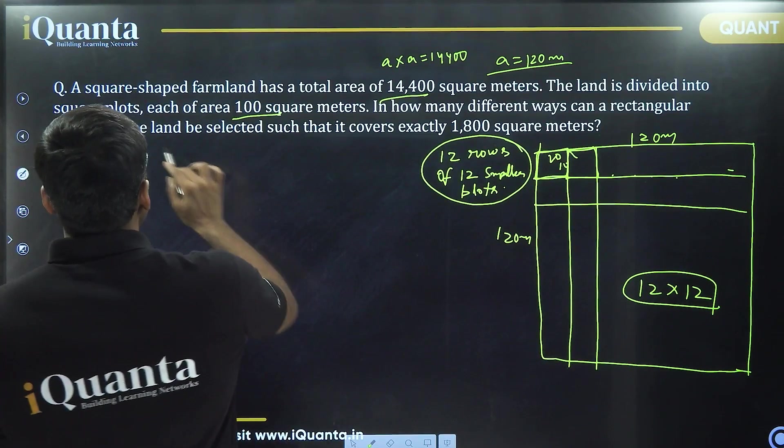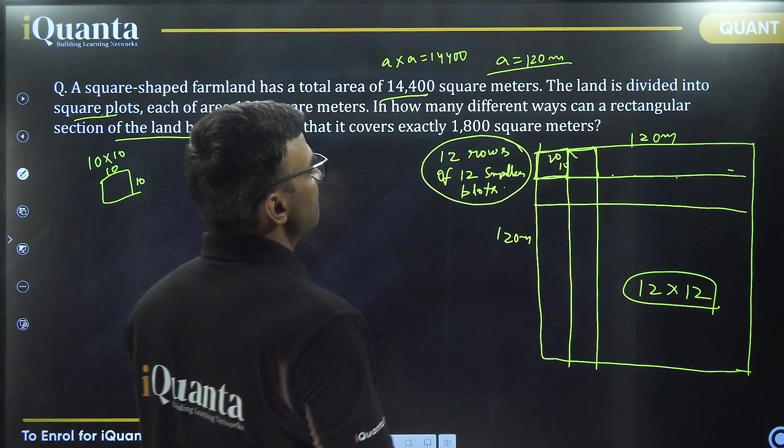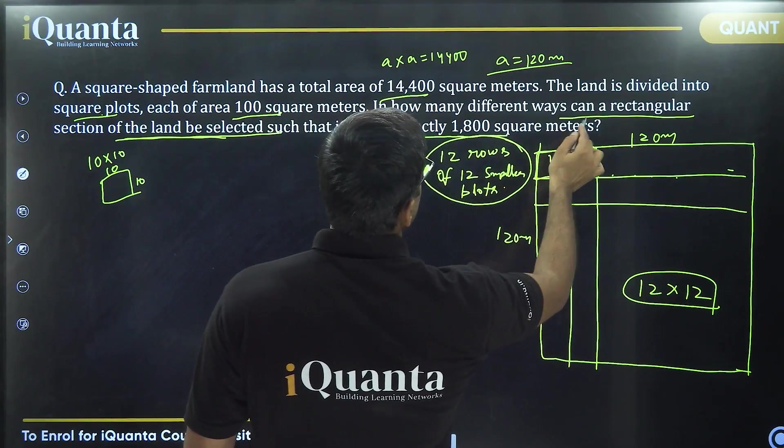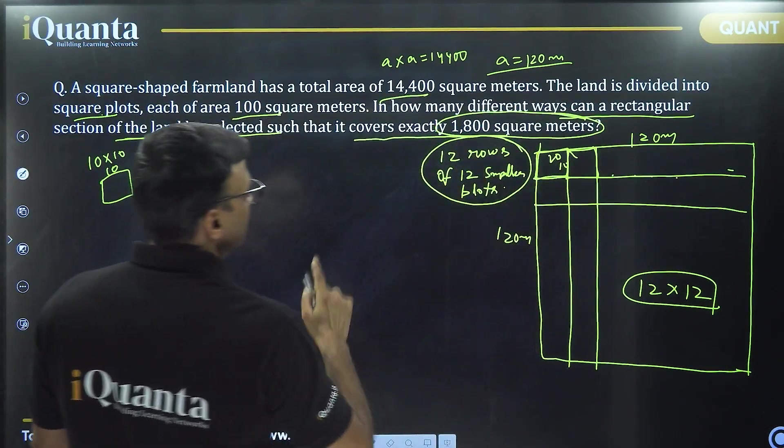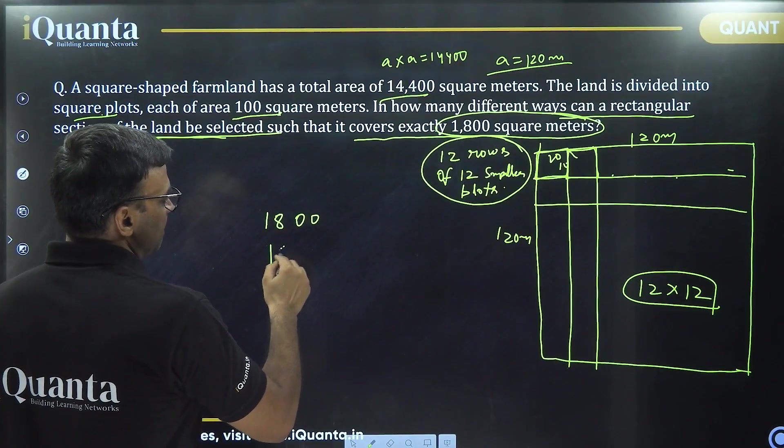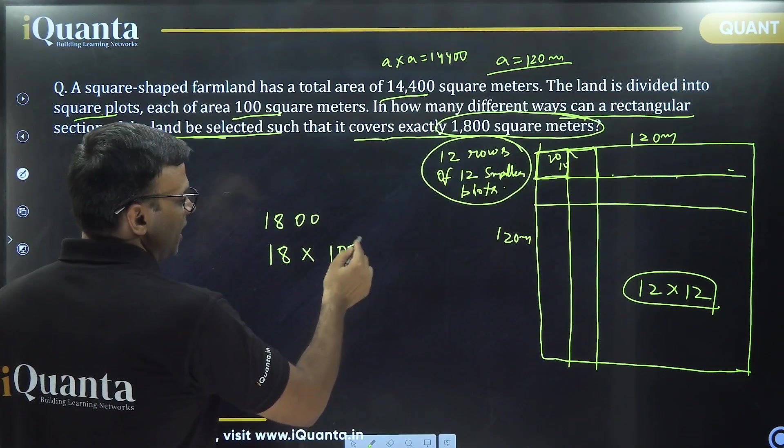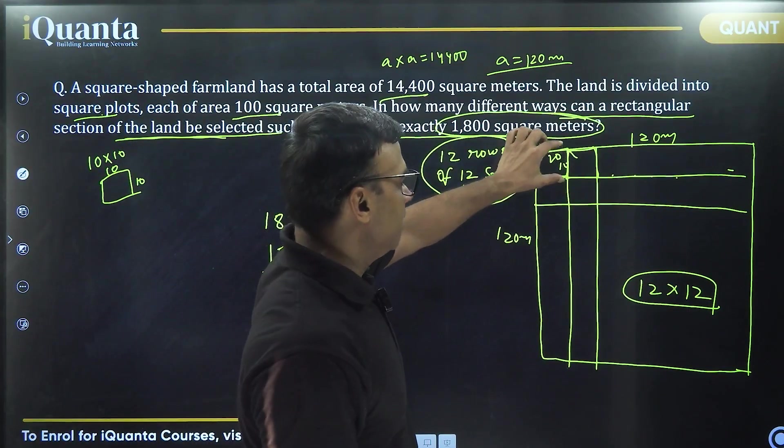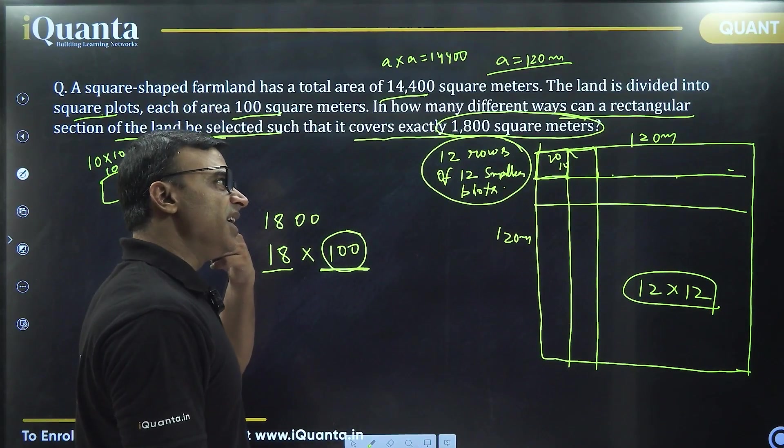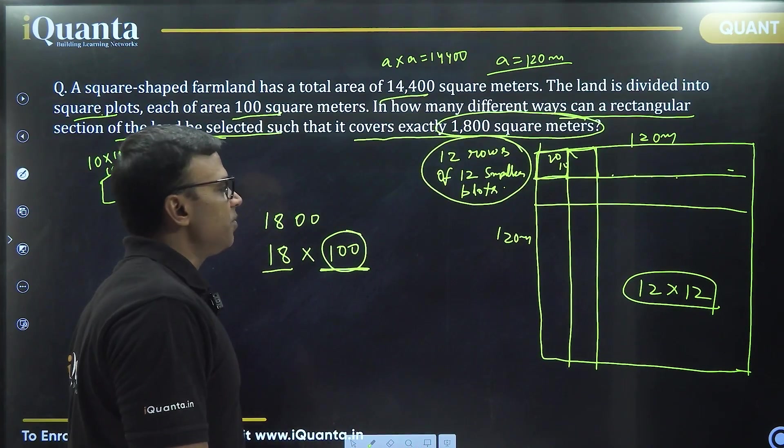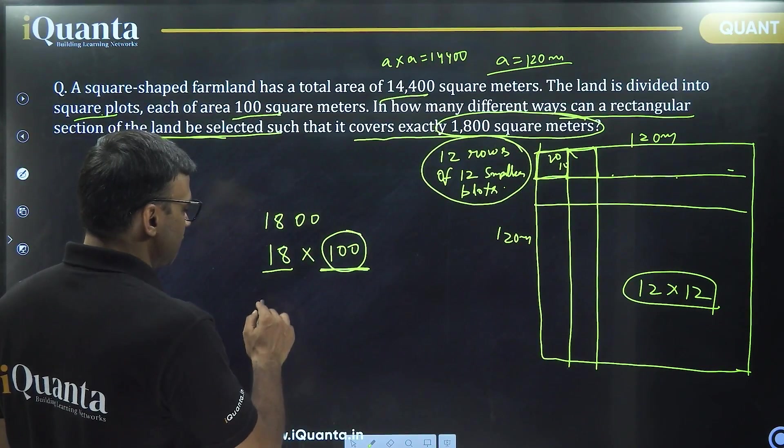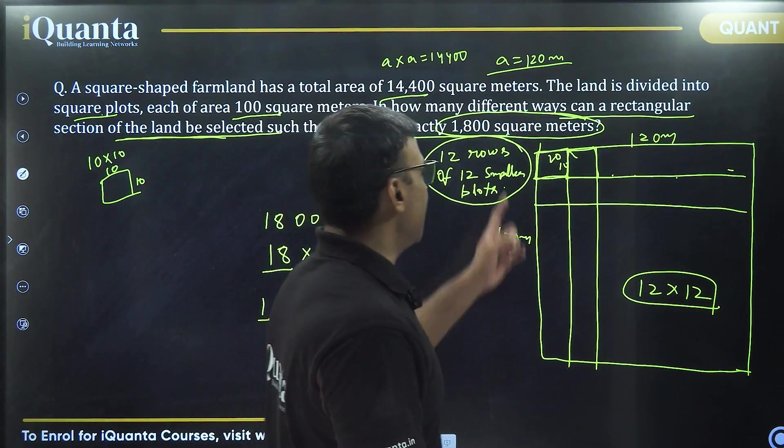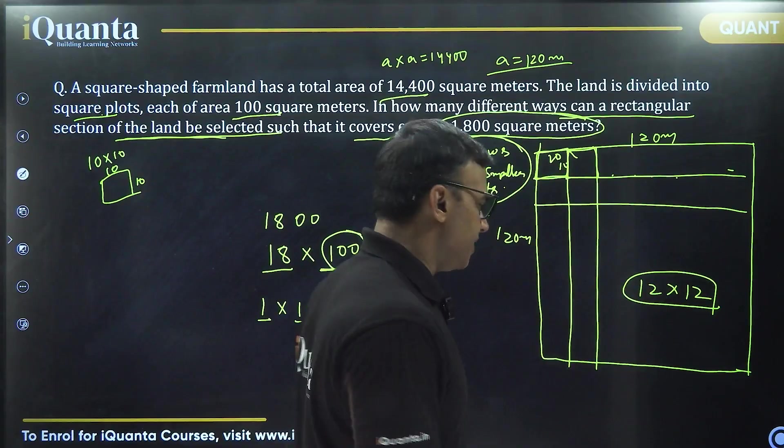Now comes the important part. In how many different ways can a rectangular section of land be selected such that it covers exactly 1800 square meters? 1800 square meters means 18 into 100, so we need 18 smaller plots. One plot is 100 square meters, so I need 18 such plots. But how should these 18 plots be spread across? Can I have it as 1 into 18, 1 row of 18 plots? No, because in any row we have 12 plots only. So this is ruled out.